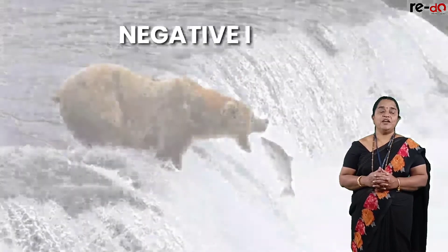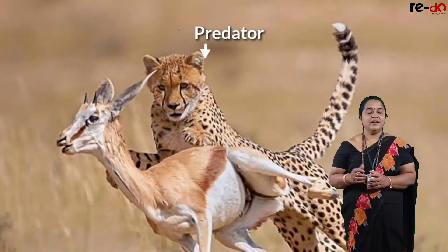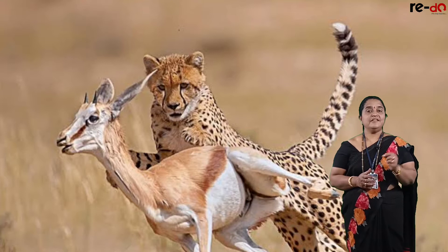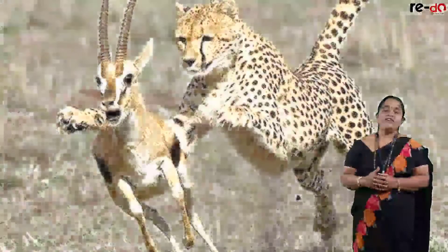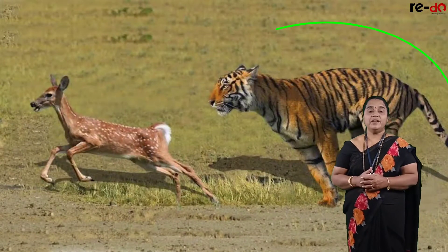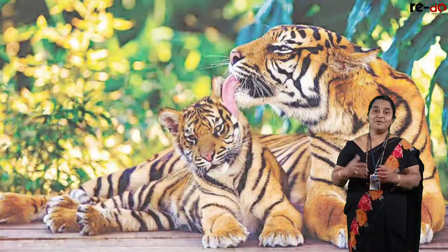Let us start with negative interactions, beginning with predation. Predation is an interaction between two species in which one species is the predator and the other is the prey. Most of the time, predators are animals. Predators are always benefited because they kill the prey for food, while prey is always under loss. Comparatively, the size of the predator is always bigger than the prey, and the number of predator organisms is very less compared to prey.